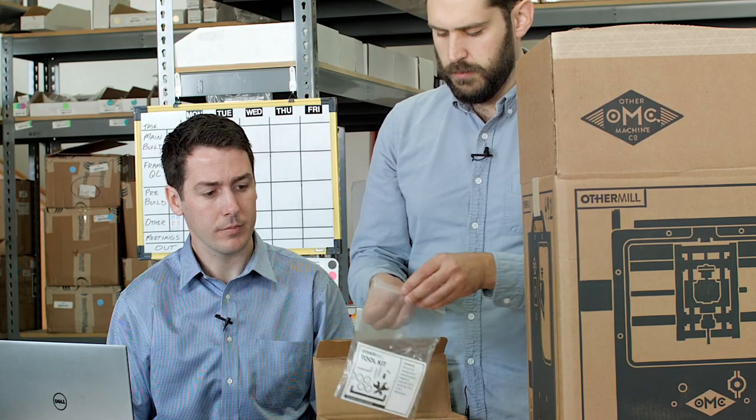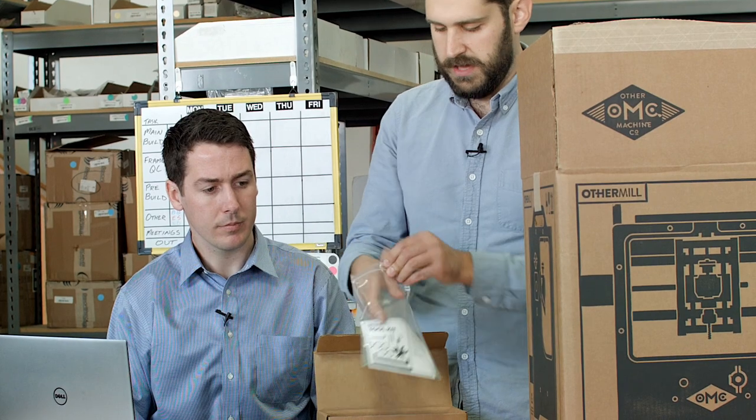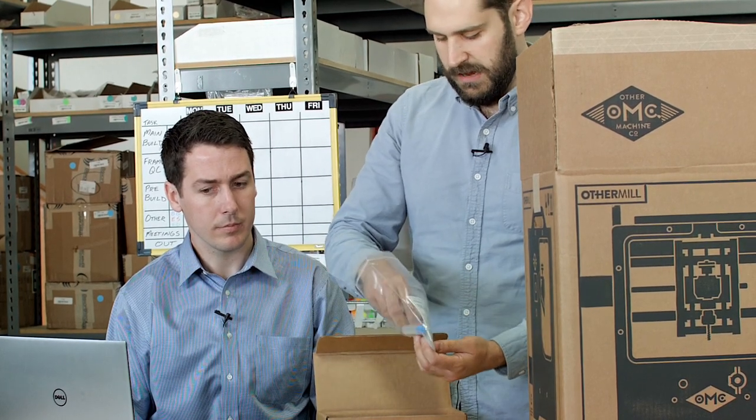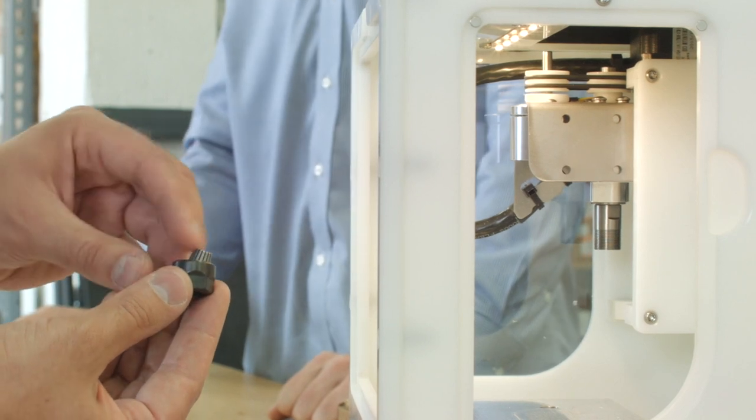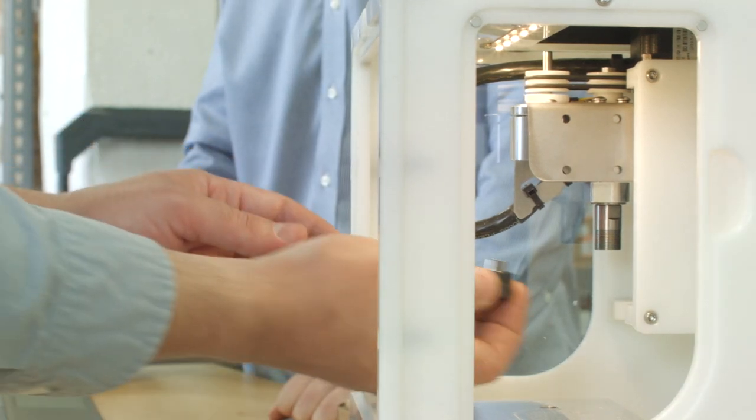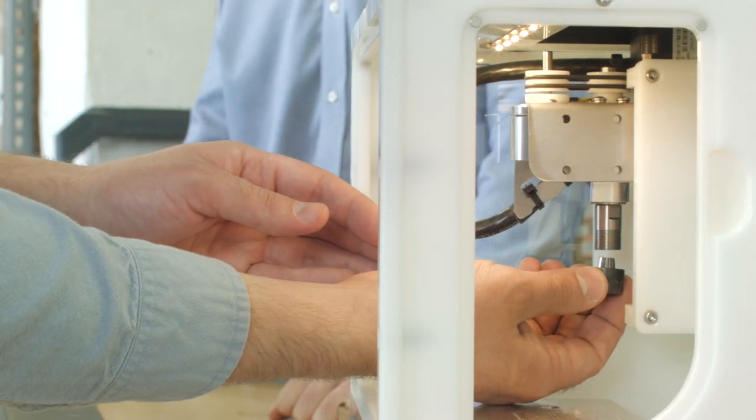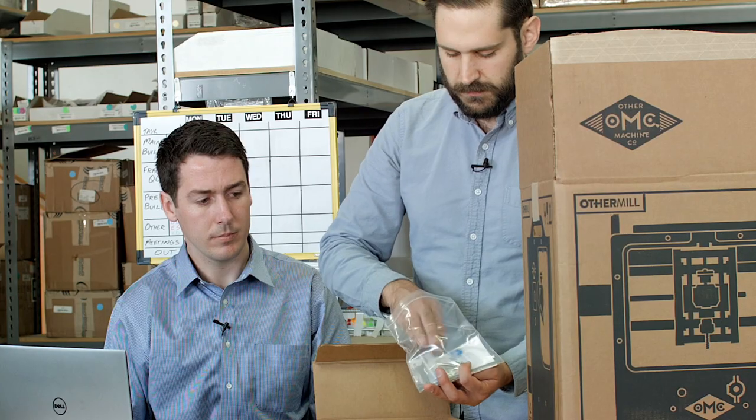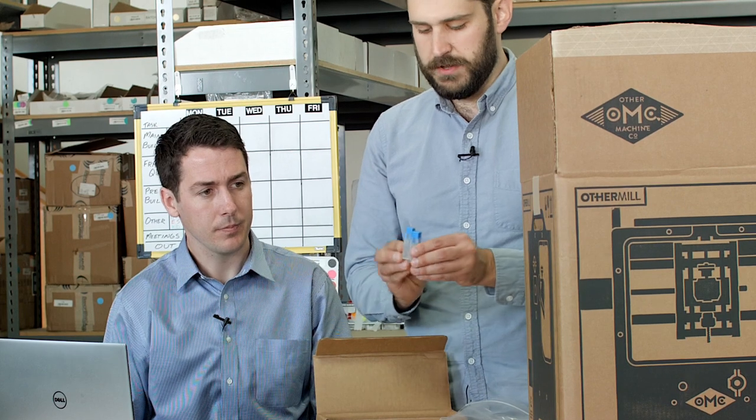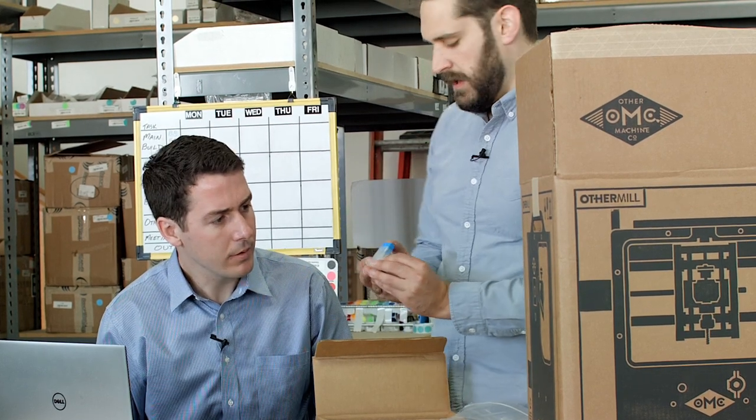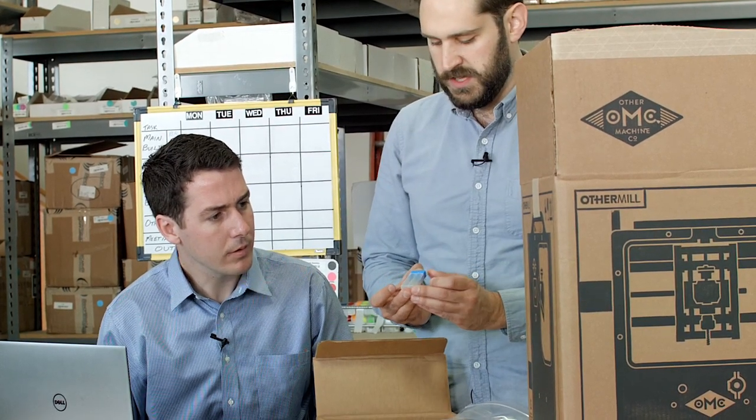So this has all the tools that you need to assemble and use the Othermill. We got an ER-11 eighth inch spring collet. This is a collet that will hold your bit, hold your milling tool as you're milling. Really key part. Comes with two milling tools. So these are end mills. They're like little drill bits, basically, that are used in a CNC mill like the Othermill.